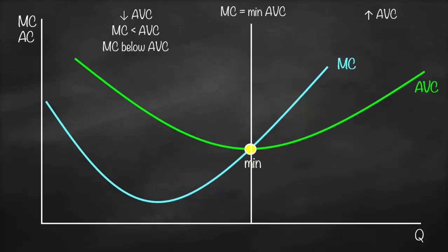If we look at the other side, after the minimum, average variable cost is increasing. This means that marginal cost has a bigger value compared to average variable cost, so marginal cost will be above average variable cost.